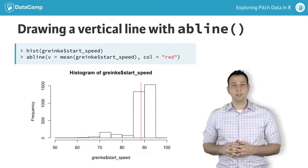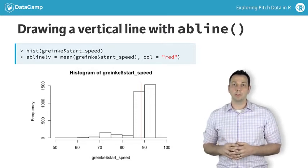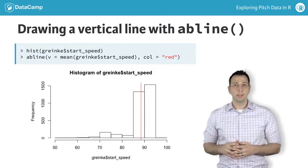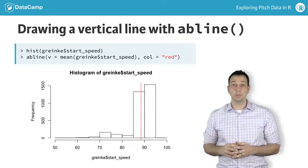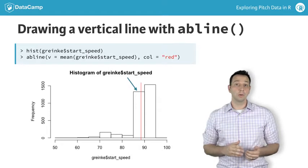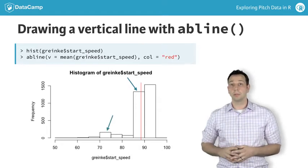Something else to notice about this figure is that it can be useful in identifying multimodal distributions. This could indicate some separation in velocity related to the type of pitch thrown. This is easy to see here, where it looks like Greinke has a higher velocity distribution for fastballs, and a separate lower velocity distribution for off-speed pitches.